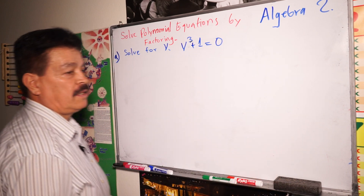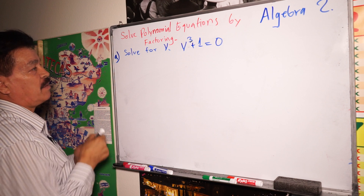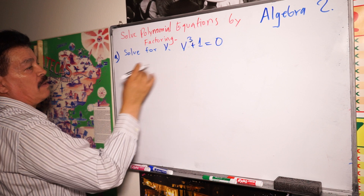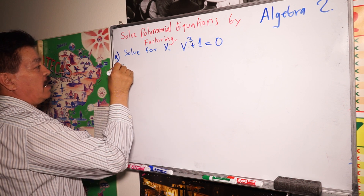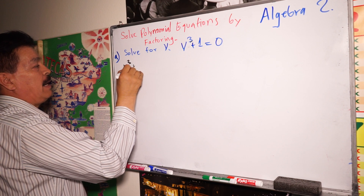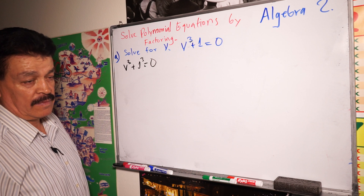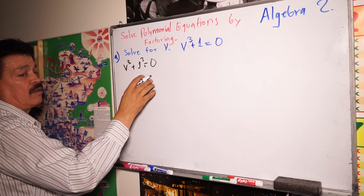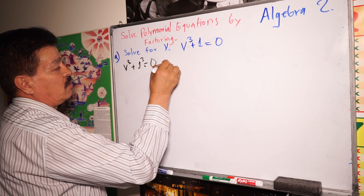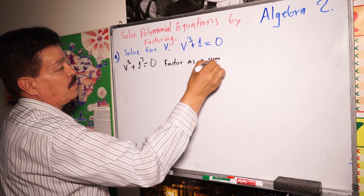Let's go and solve this problem. Next step, we are going to have B to the third power plus one to the third power equals zero. We factor this as a sum of cubes.